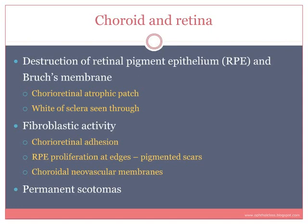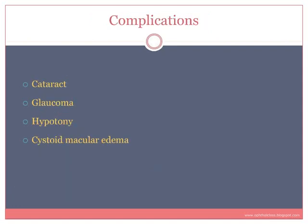All areas of chorioretinal atrophy are permanent scotomas. When this occurs in the macular area, they cause central visual loss. The most common complications of uveitis are cataract, glaucoma, hypotony, and cystoid macular edema.